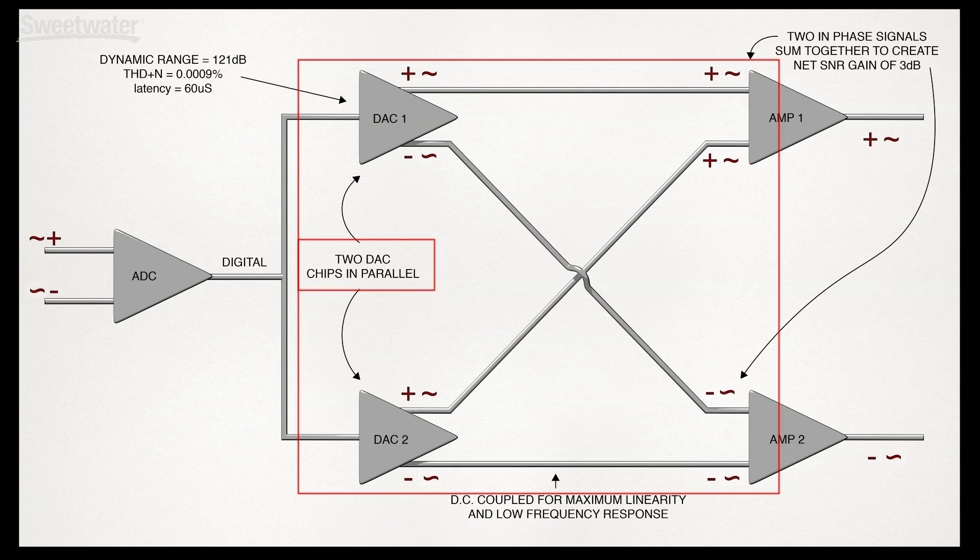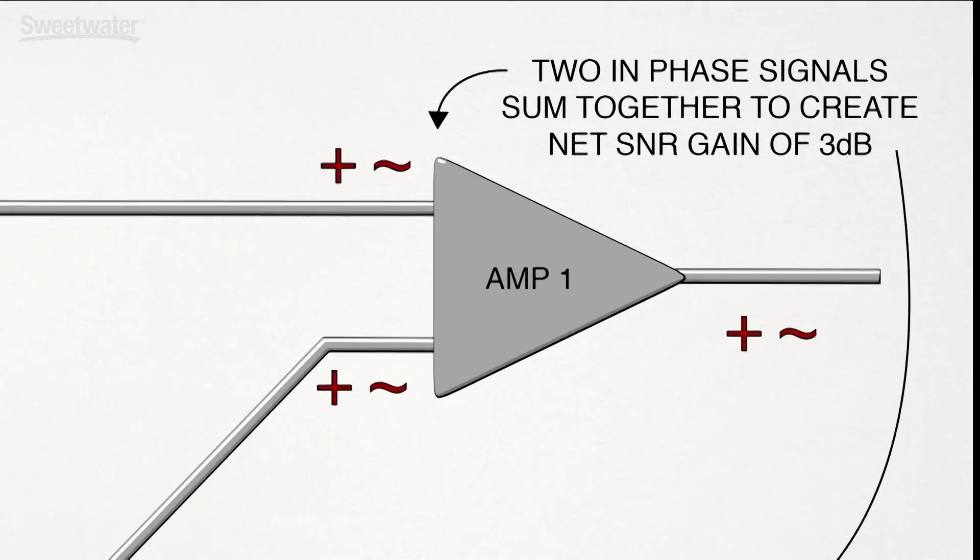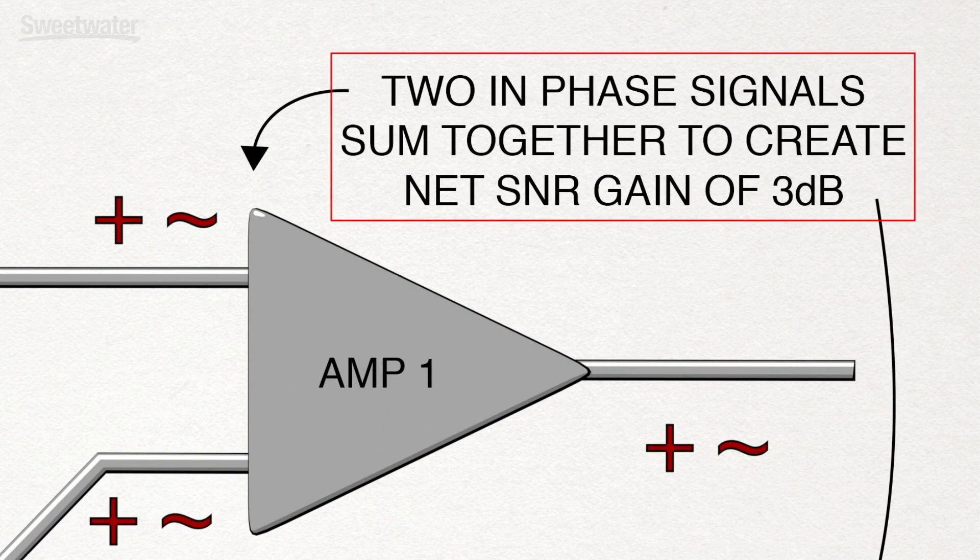We use two conversion chips in parallel to significantly enhance the signal-to-noise ratio. Using two converters in parallel and summing the result gives an increase in signal level of 6 dB, as the two signals are in phase, while random noise is only increased by 3 dB, as phase cancellation happens on average 50% of the time. The result, a net improvement of signal-to-noise ratio of 3 dB.